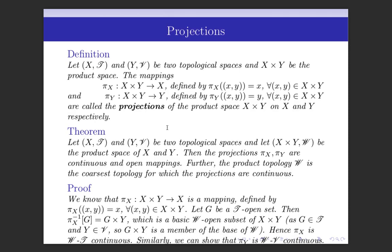Let us define. Let (X, T) and (Y, V) be two topological spaces and X cross Y be the product space. Then the mapping π_x from product space X cross Y to topological space X, which maps (x, y) to x for every (x, y) in X cross Y, is called the projection of the product space X cross Y on X. Similarly, the mapping π_y from product space X cross Y to topological space Y, which maps (x, y) to y for every (x, y) in X cross Y, is called the projection of the product space X cross Y on Y.